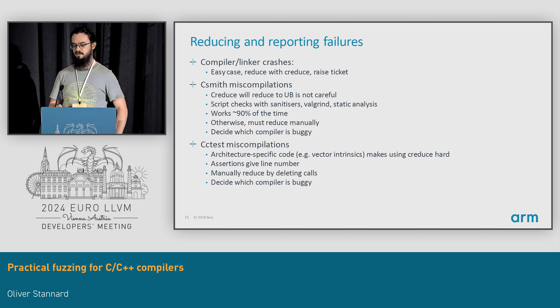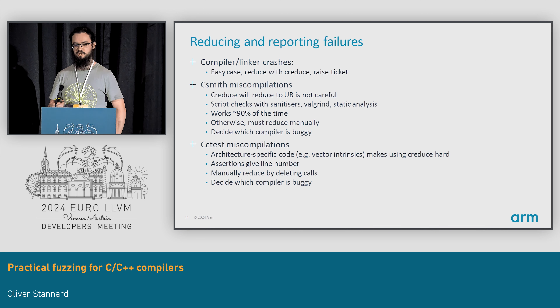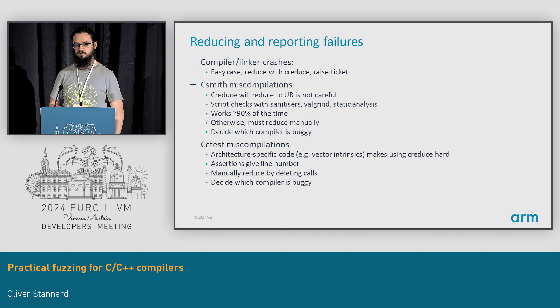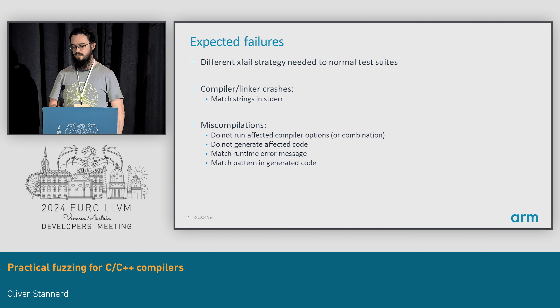For CCTest, it's hard to use CReduce — even harder because there's lots of architecture-specific code like vector intrinsics — so mostly I reduce these by hand. It's not quite as hard as CSmith because most failures are assertions that give you a file name and line number. If not, you can quickly remove most of the code just by deleting calls, removing half of the program at a time. These fuzzers also differ from a normal test suite in how you deal with failures you've discovered but haven't yet fixed. In a normal test suite you can mark a test as an expected failure, but with fuzzers you can't do that because if one randomly generated program triggers the bug, chances are there'll be another one.